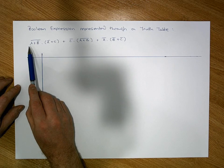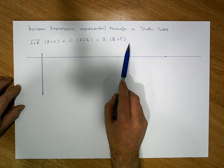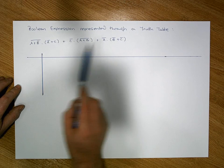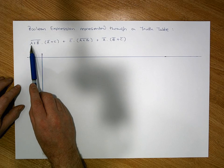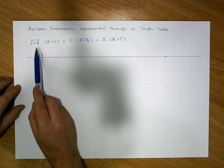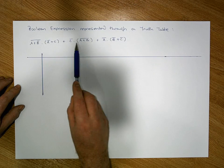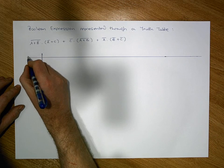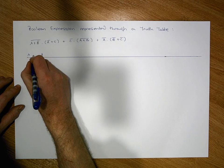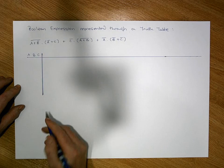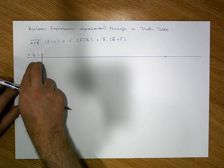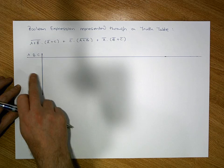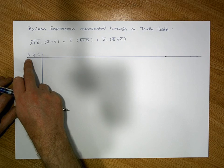The first thing we're going to do is parse the expression from left to right and count how many inputs there are — what are the unique inputs. This expression has A's, B's, and C's and no other letters, so the inputs are A, B, and C. Let's write them here: A, B, C. On the left-hand side of this double bar we're going to list all possible states these three inputs could be in simultaneously.